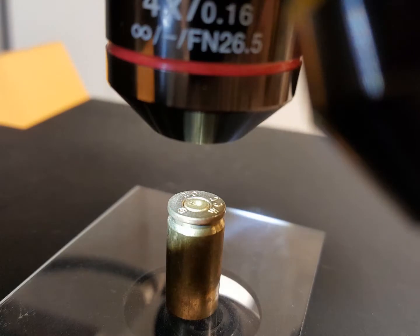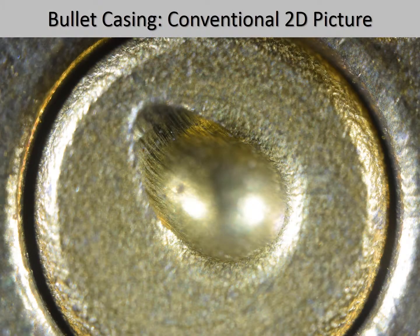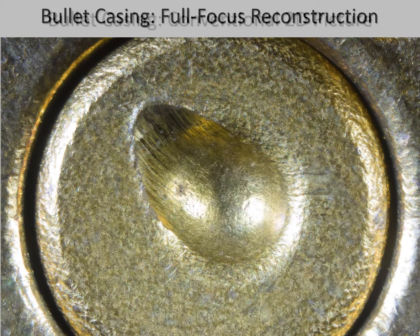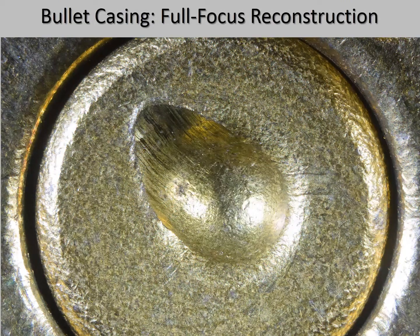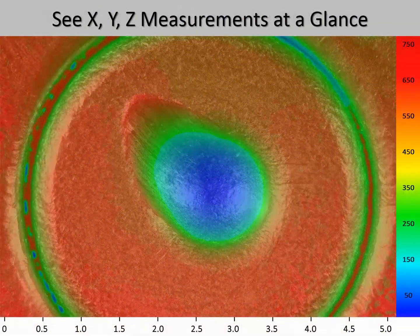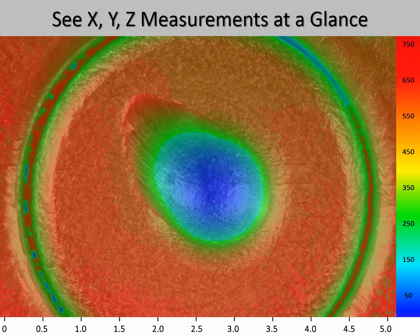Let's look at the shell casing of a bullet with the EDGE 3D Microscope. This is a conventional two-dimensional image of the end of the bullet casing, and as we can see, only a small portion of the image is in focus. Compare that with the full focus image produced by the EDGE 3D Microscope.